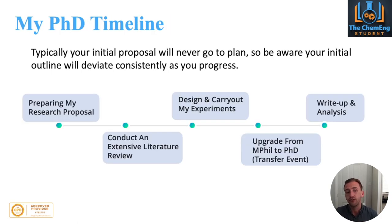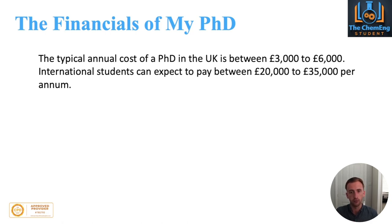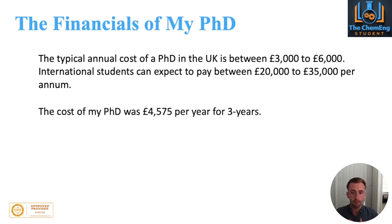A lot of people ask me how much a PhD costs. We talk about different costs for different types of students in different countries in our PhD Fully Explained video — I'll put a link in the description. Typically the annual cost for PhDs in the UK for home students is between £3,000 and £6,000, while international students can pay anywhere between £20,000 and £35,000 a year. The cost of my PhD at my institution was £4,575 per year for three years as a full-time student.